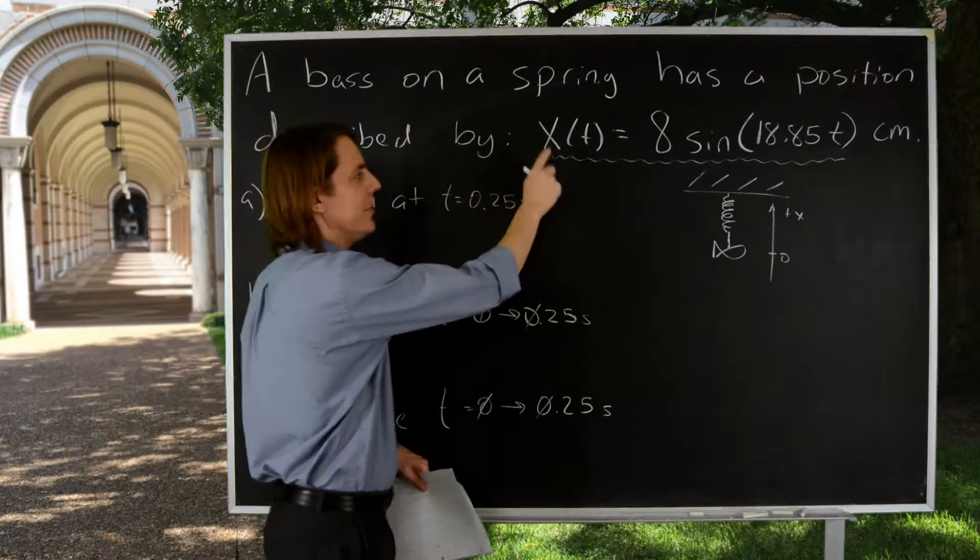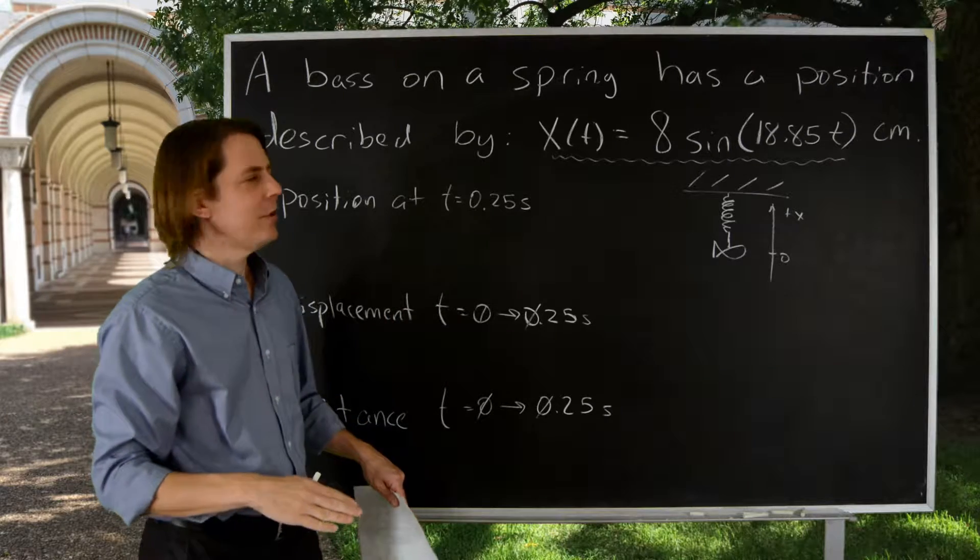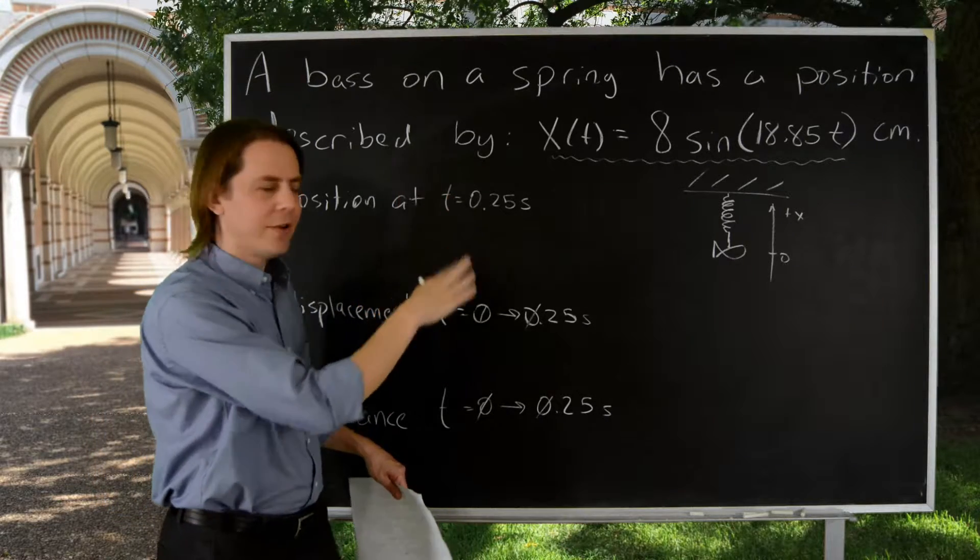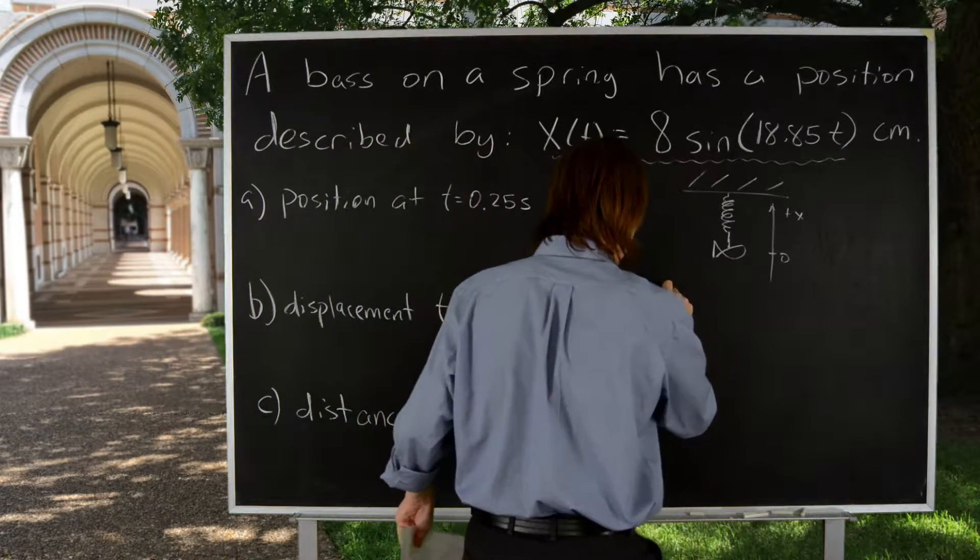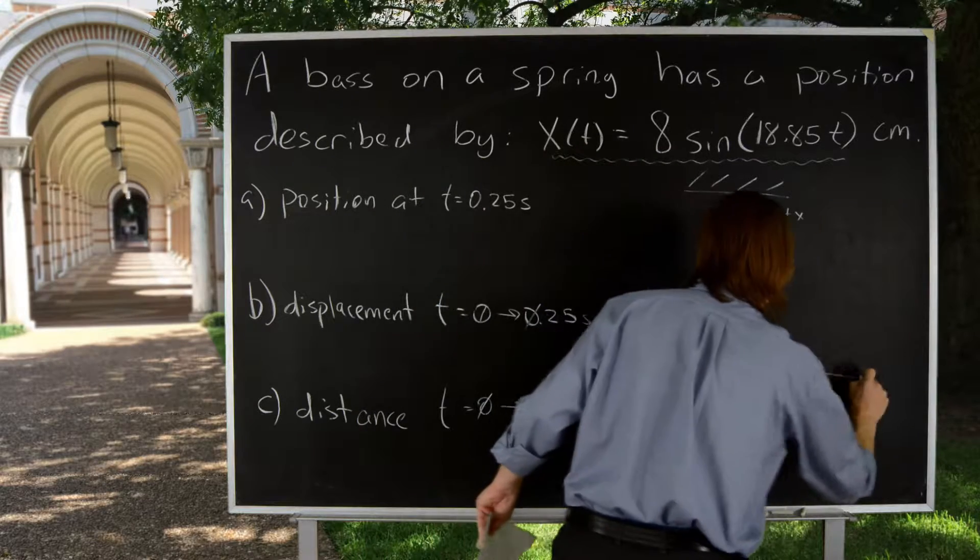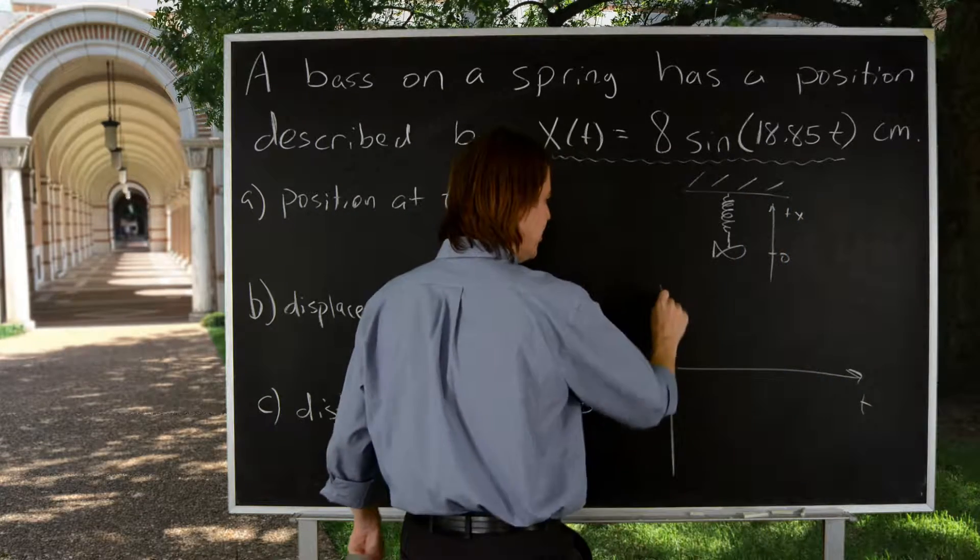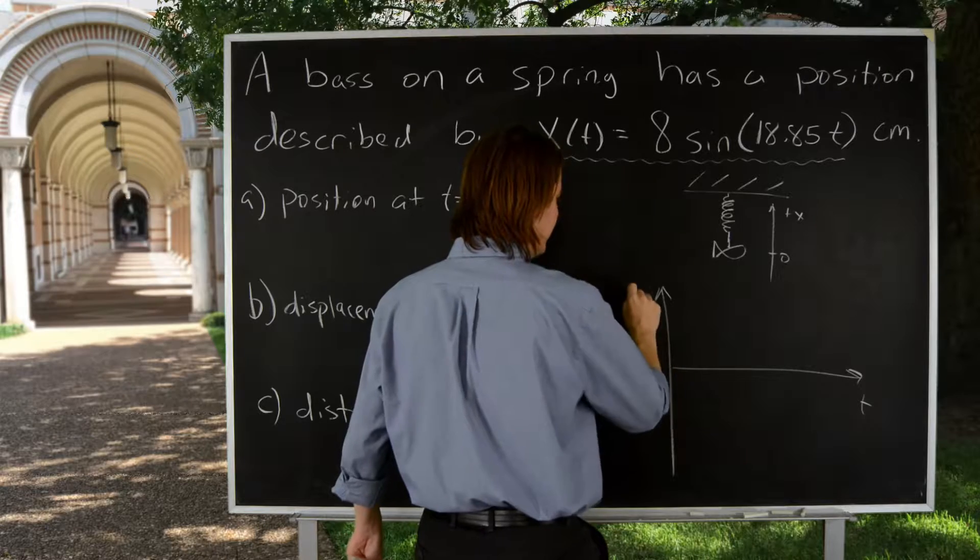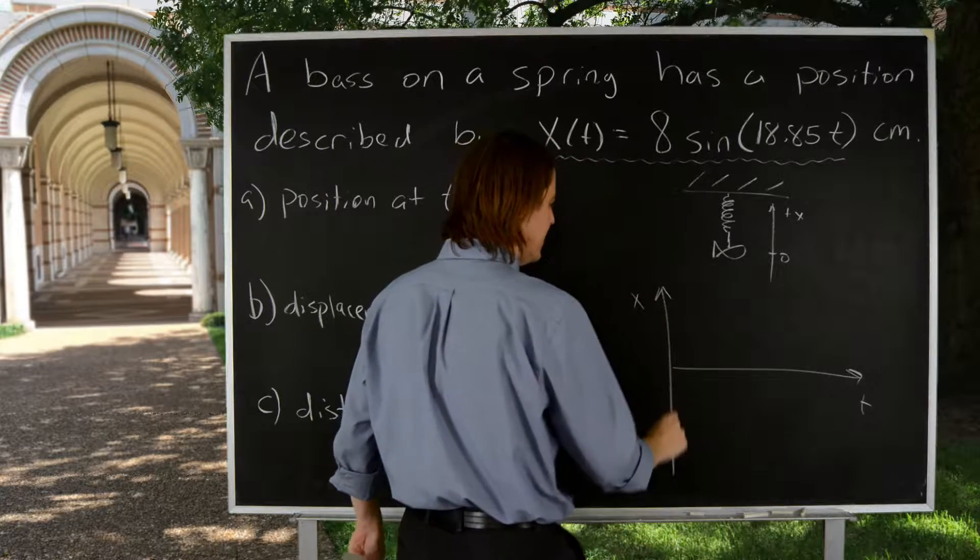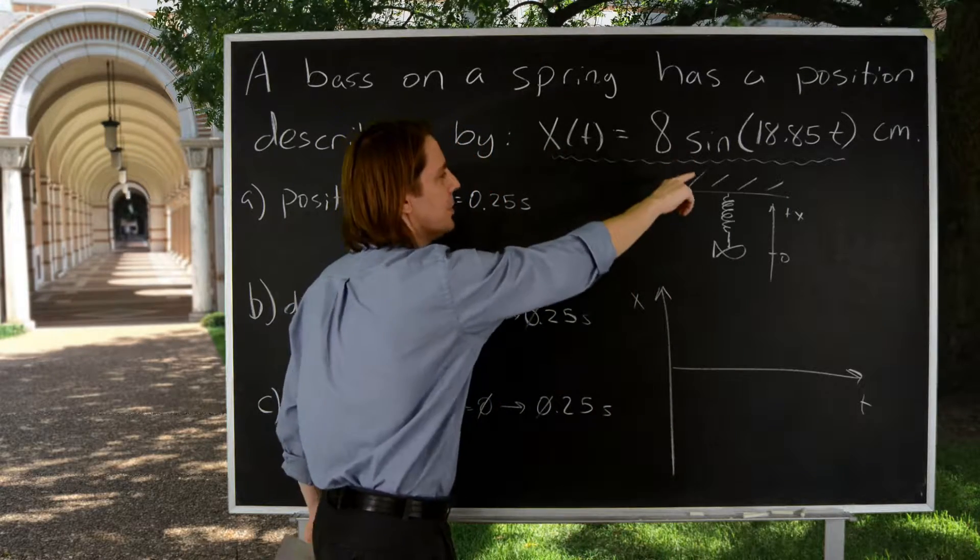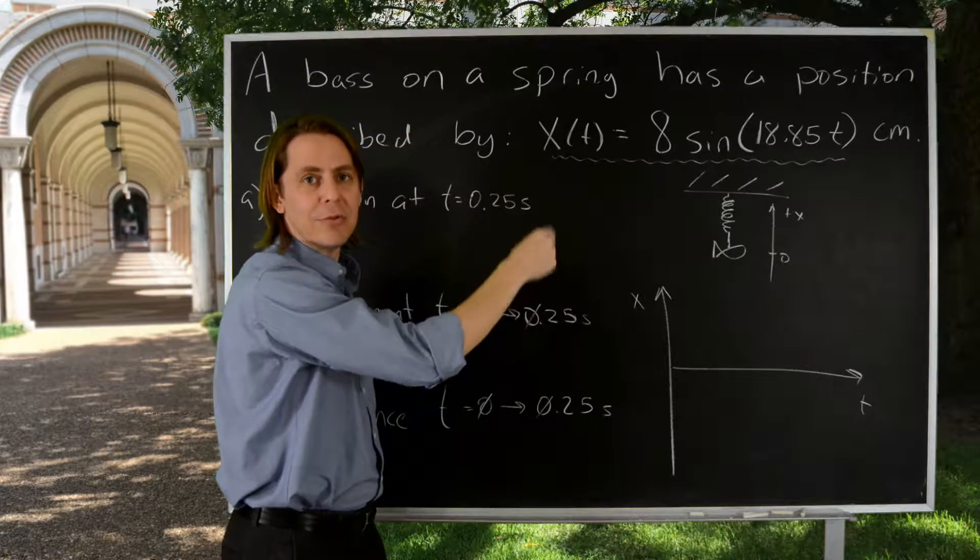Two, plot this function. You all have graphing calculators now. It's not that much work. Make yourself a plot and just get an idea of what the motion is going to look like. So here, time on that axis and position on this axis. And it's a sine function. Sine functions also go up and down, so that's good.